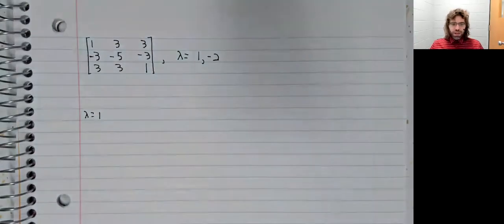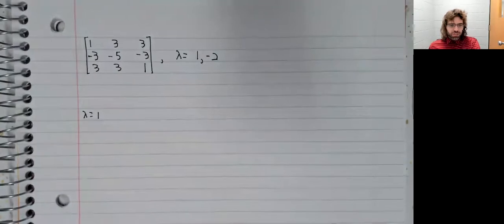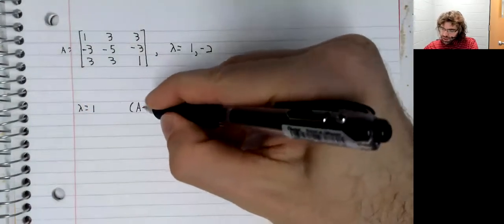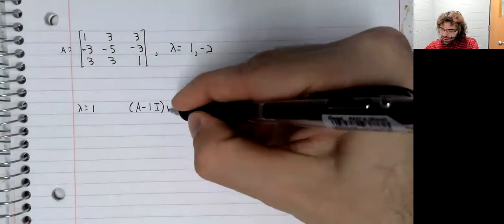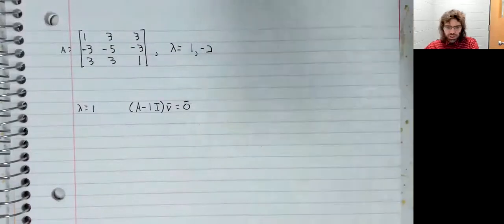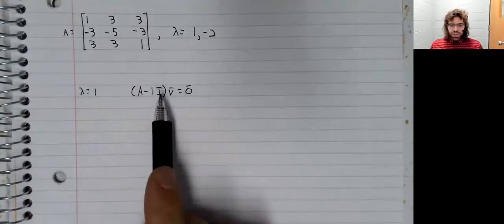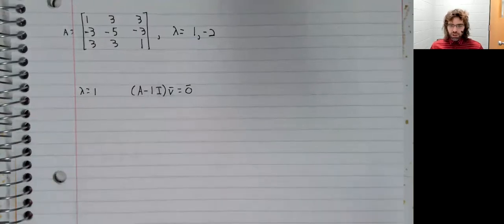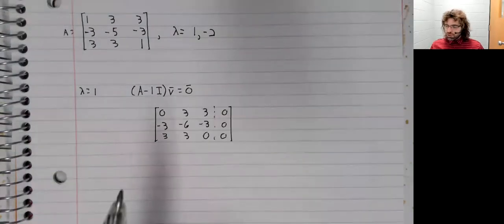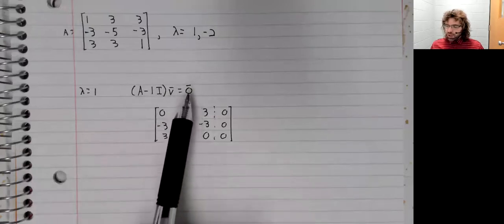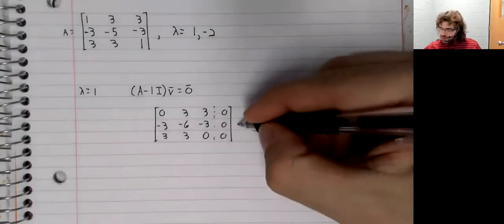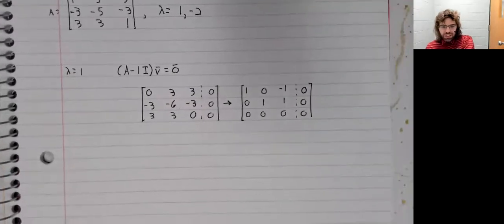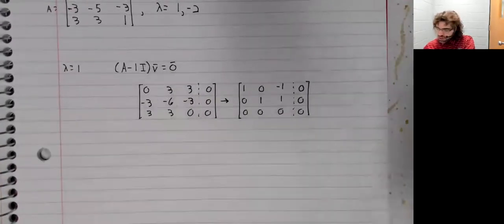Let's look for eigenvectors, and this I'll show in a little more detail. Call this A. So we want A minus one I times V equals zero. We set up and solve an equation. We do Gauss-Jordan elimination on the appropriate augmented matrix. A minus one I augmented with the zero vector. And when we do the Gauss-Jordan elimination, we get to this.